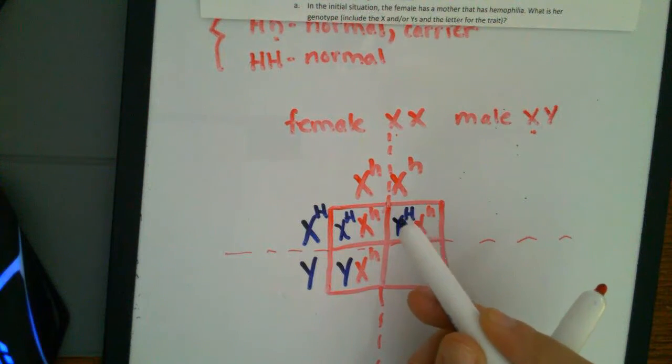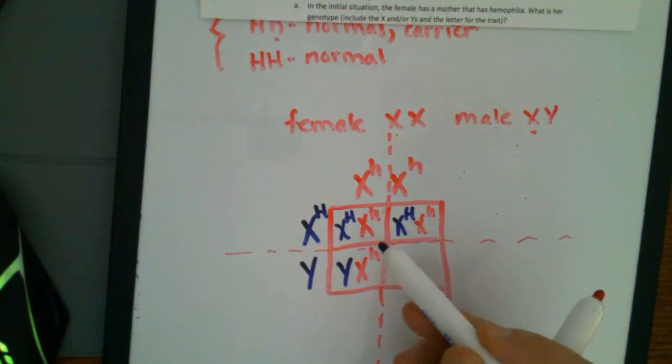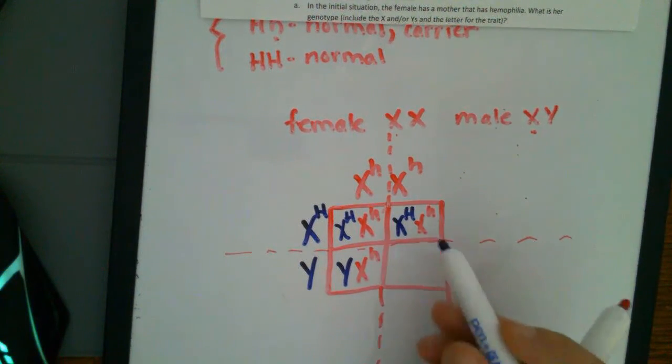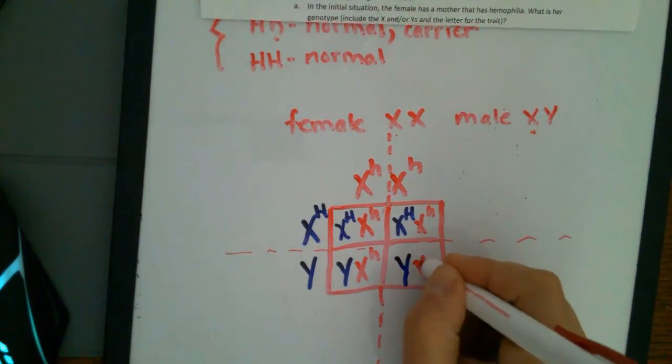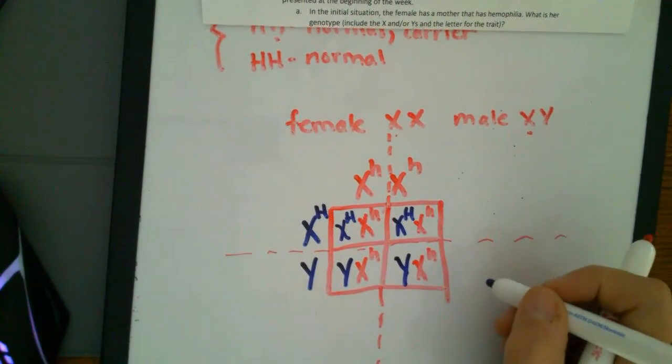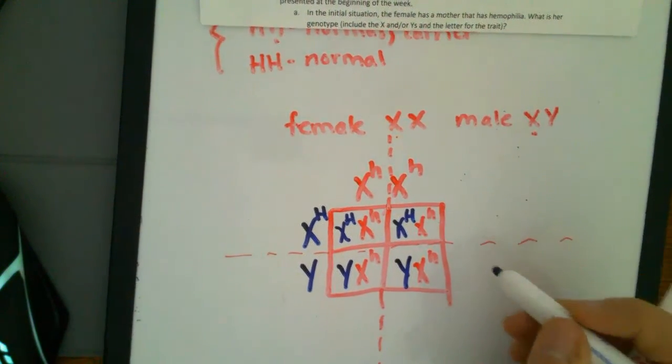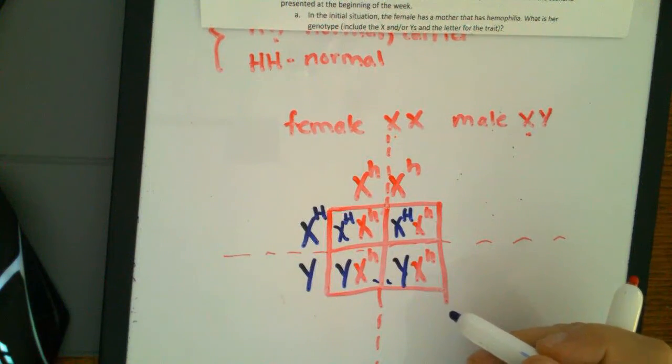So can you see here how sex-linked traits are going to affect females differently than they're going to affect males? Because males don't have two X's. They don't have a possibility to have that extra allele on there. Same over here. You got Y, and you got X, little H. So what this means is that overall, there's a 50% chance, two out of four, of your child having the disease.